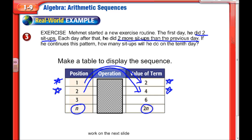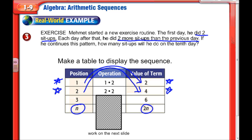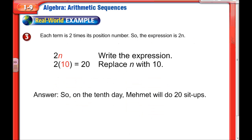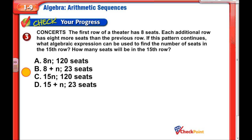We simply multiply the day, or position, by 2: day 1 times 2, day 2 times 2, day 3 times 2 — so the rule is n times 2, written as 2n with the coefficient first. To find the 10th day: 2 times 10 equals 20. On the 10th day you'd be doing 20 sit-ups.